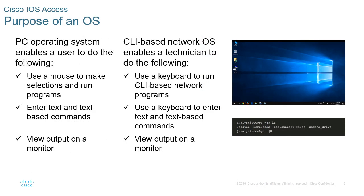The PC operating system enables the user to use the mouse, make selections, run programs, use the keyboard to enter text-based commands, and view output on a monitor. CLI-based network operating systems are similar, but the key difference is that since CLI is text-based, you can only use the keyboard to enter commands and run network programs, with the monitor used to view the output.